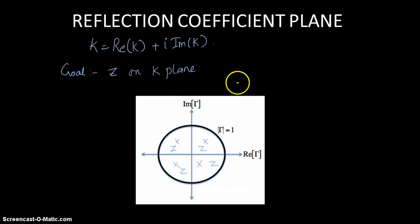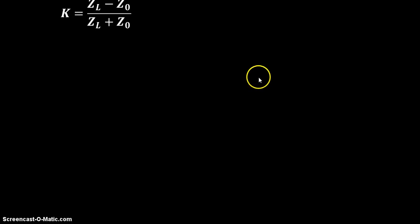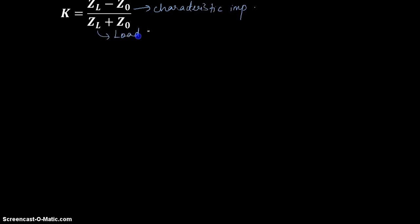In order to do this we have to start looking at the link between impedance and reflection coefficient. For this we started off with the basic equation of reflection coefficient: k is equal to ZL minus Z naught divided by ZL plus Z naught, where Z naught is the characteristic impedance and ZL is the load impedance.